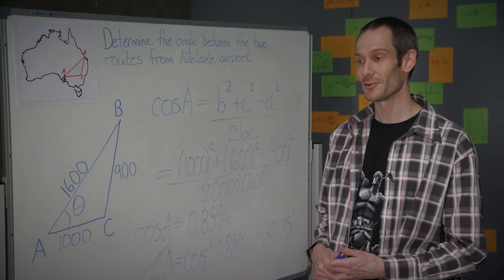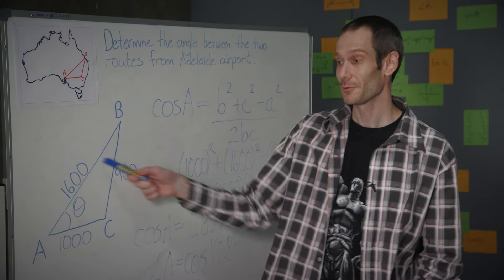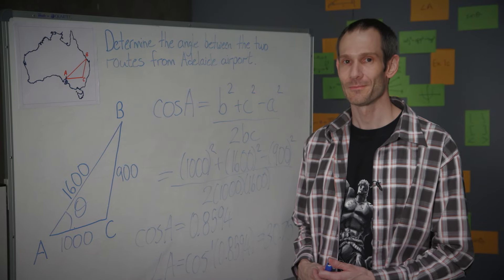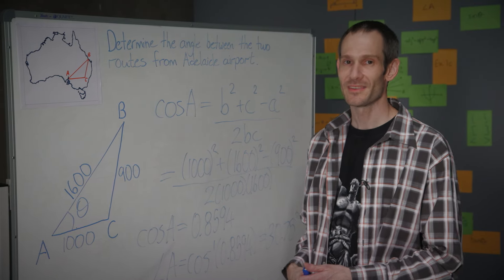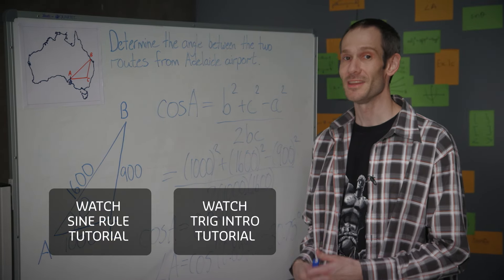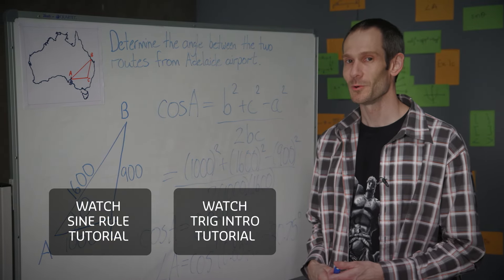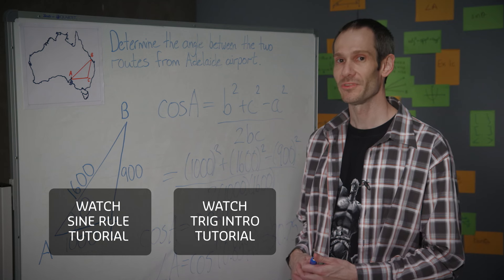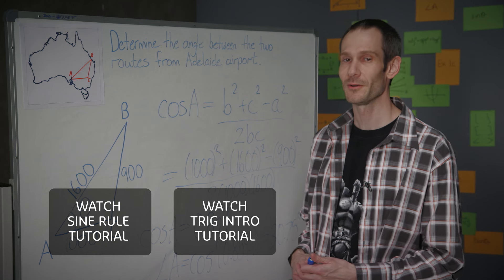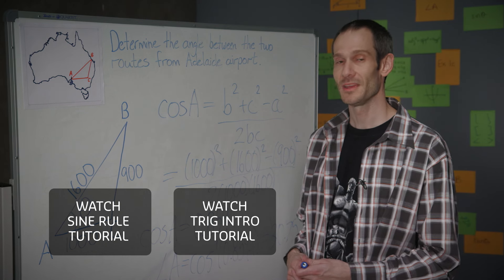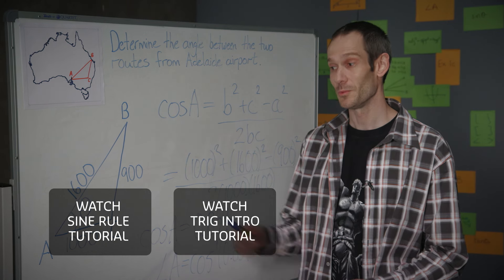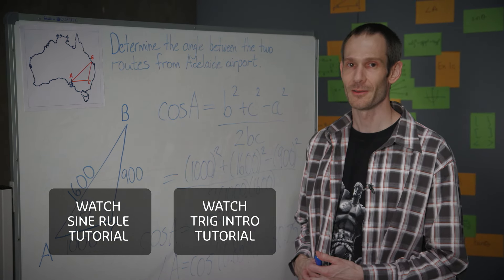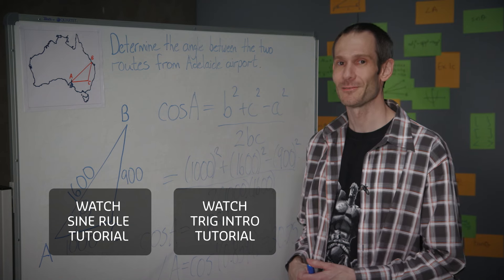So here was an example where I had a triangle with three given sides but no angles. In summary, you need to use the cosine rule if you're given a triangle with all sides and no angles, or you're given a triangle with two sides and an enclosed angle. Thanks for watching.